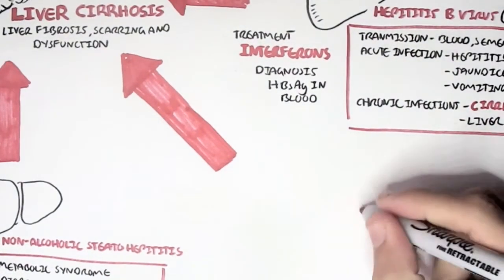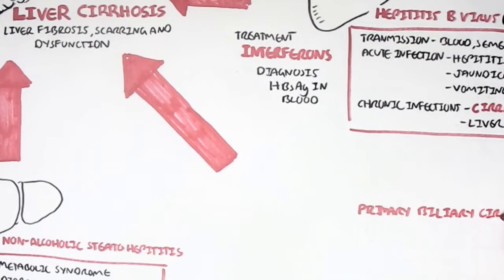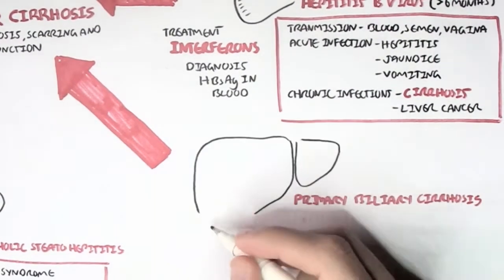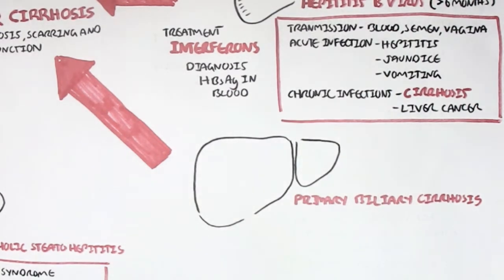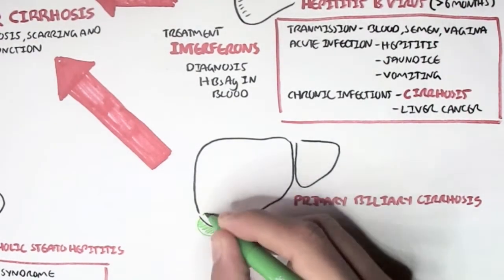Primary biliary cirrhosis can also cause liver cirrhosis. Primary biliary cirrhosis is basically cirrhosis, which is fibrosis and scarring of the biliary tract as well as destruction of the bile duct.